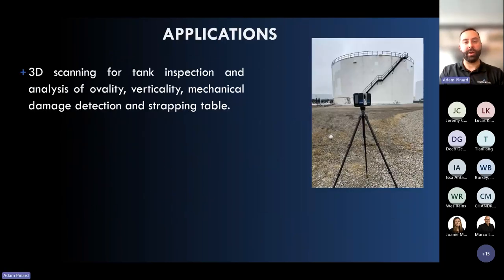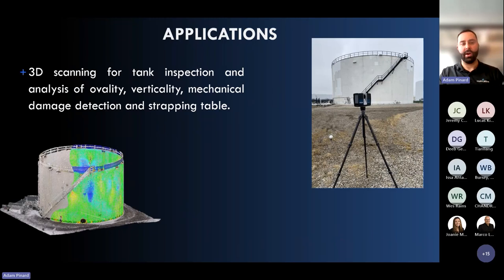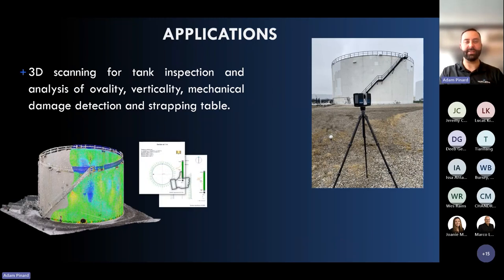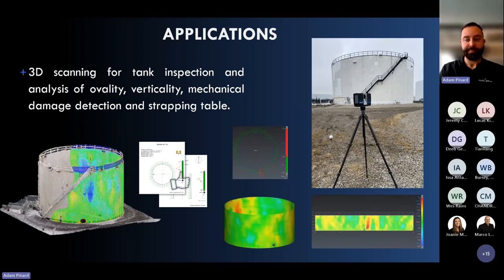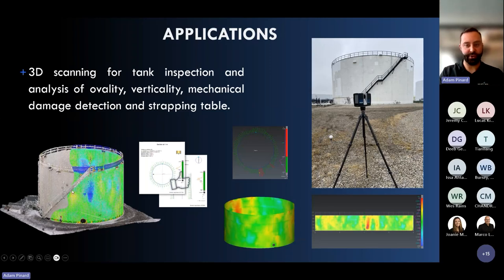For those in the oil and gas industry and aware of API standards, we do tank inspection and analysis for ovality, verticality, mechanical damage detection, and strapping tables. We can perform exterior scans, interior scans, or combine interior and exterior — these are types of projects we frequently do.